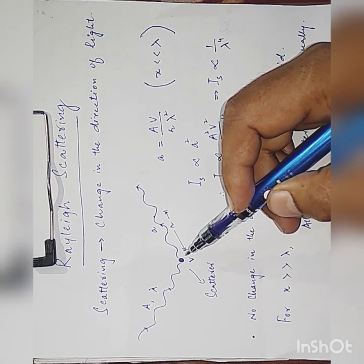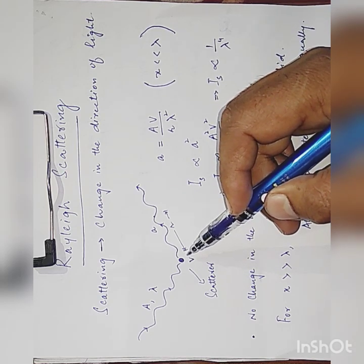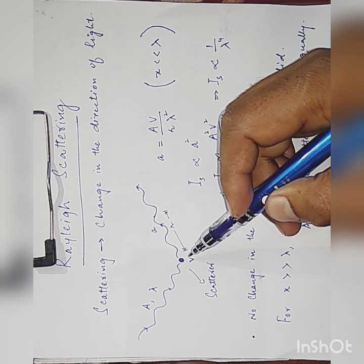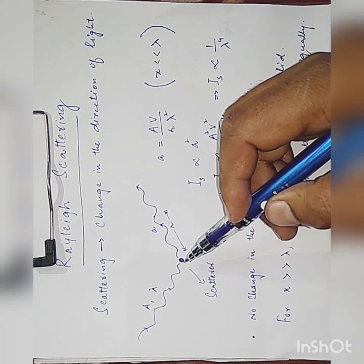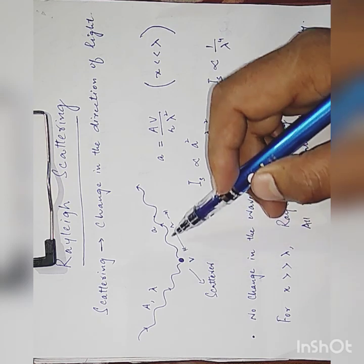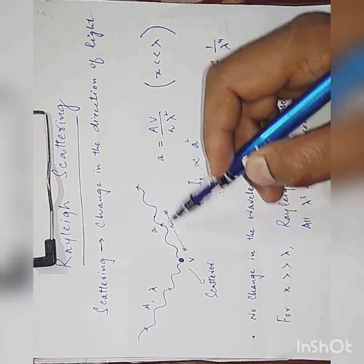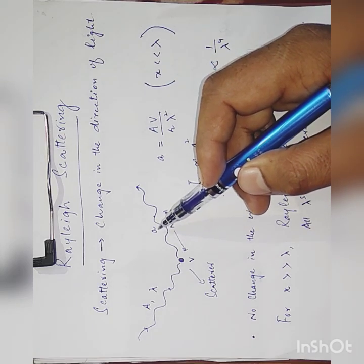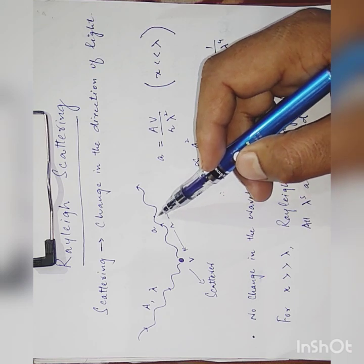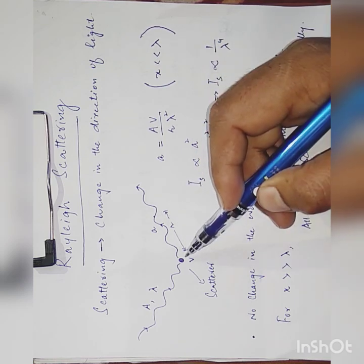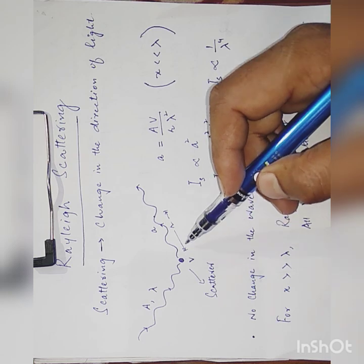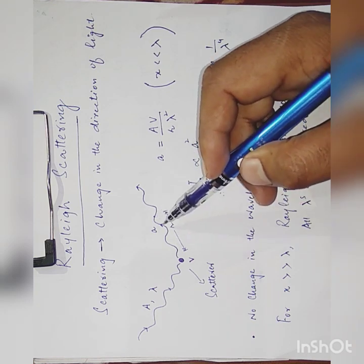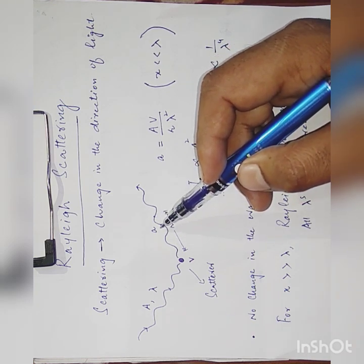This incident light, when it strikes a particle — for example, an air molecule — our atmosphere has many molecules, a mixture of gases. So wherever the incident light strikes any particle, it will get scattered. The scattered radiation, the scattered light, its amplitude is small 'a' at some point which is at a distance r away from this molecule. At a distance r from this molecule, the amplitude of scattered light is small 'a'.